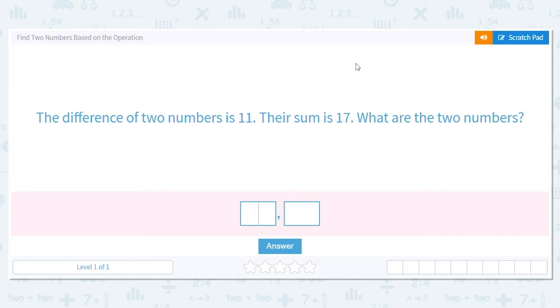Okay, so our first question says the difference of the numbers is 11. Their sum is 17. What are the two numbers? So we need to find two numbers that when you subtract them, they equal 11, but when you add them, they equal 17. So a guess and check strategy would work well for this. There's more than one right way to tackle this problem. I'm going to start off with addition.